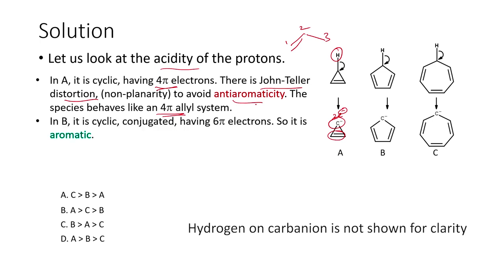In the second compound, when the hydrogen is removed, we get an anion. There are 2 electrons from the charge plus 4 pi electrons from 2 pi bonds, giving total 6 pi electrons. When we have 6 pi electrons in a cyclic conjugated system, it follows Hückel's rule, so this compound is aromatic in nature.